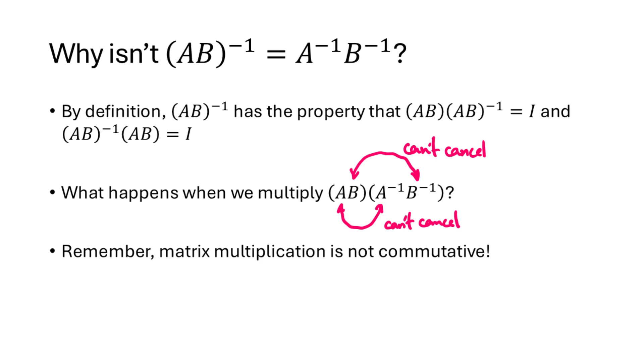And remember that matrix multiplication is not commutative. We cannot change the order of these symbols here, which means we can't get the A and the A inverse next to each other, which means we can't cancel anything out here.